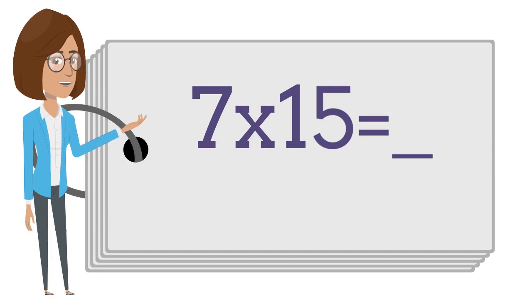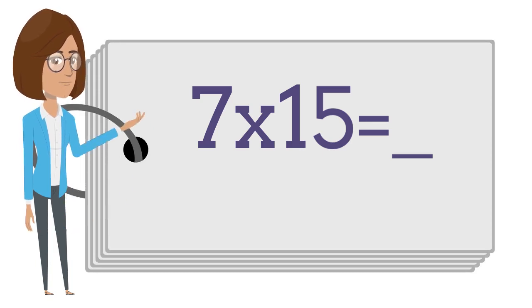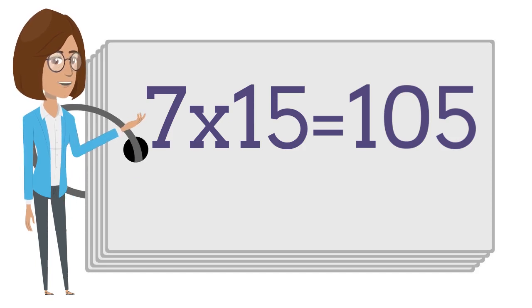7 times 15 is — say the answer out loud. 7 times 15 is 105.